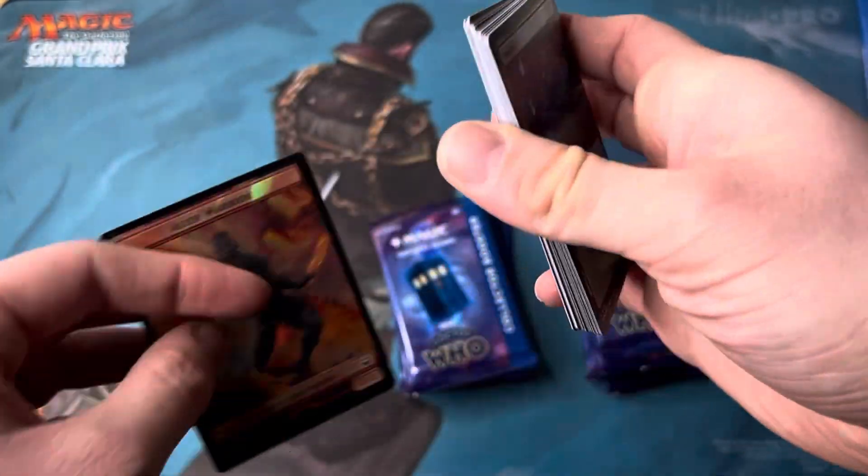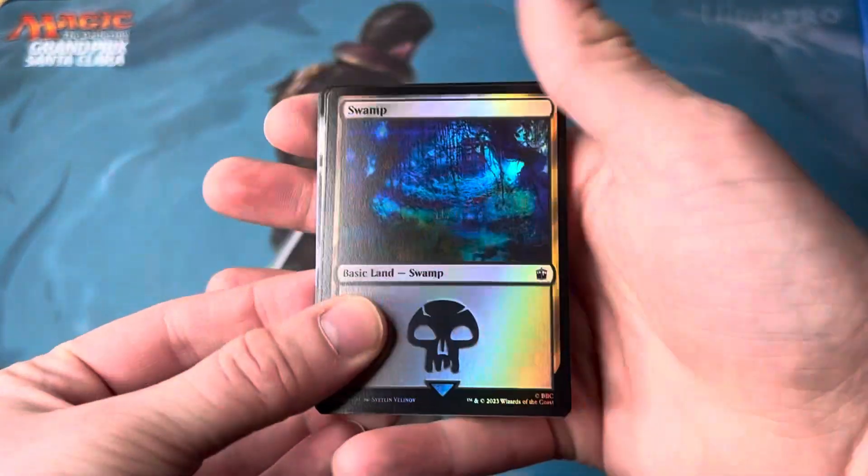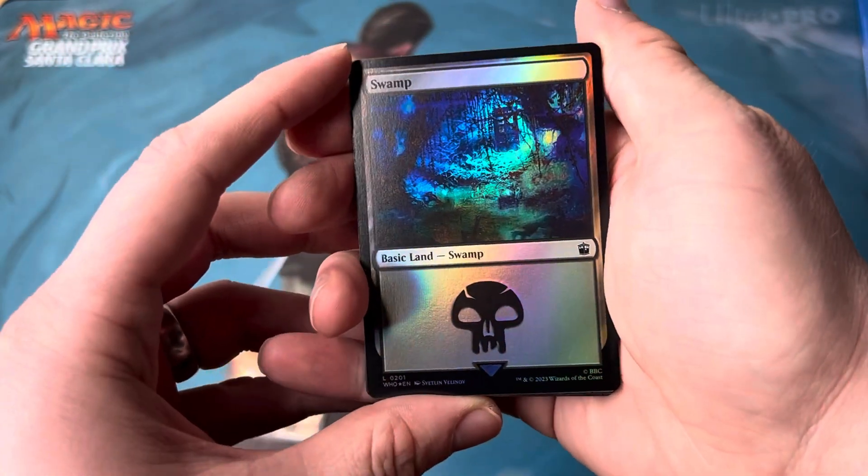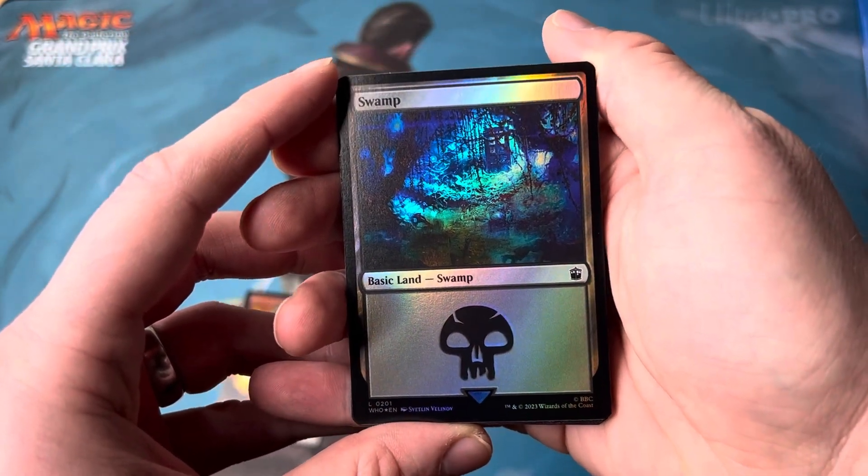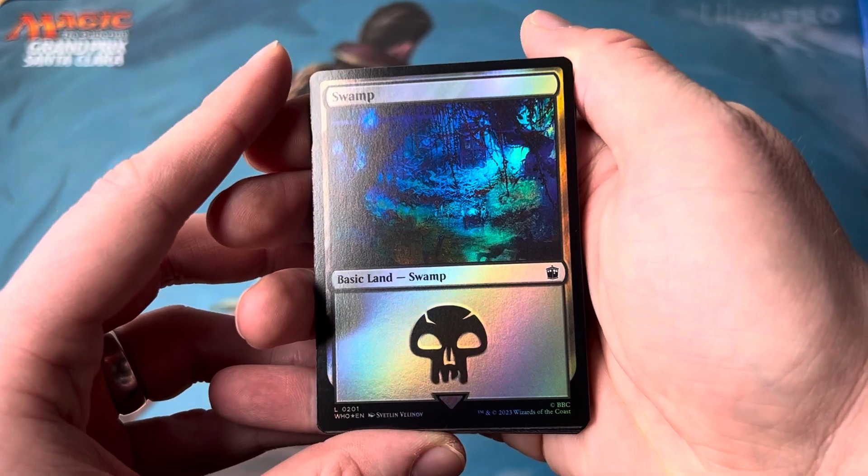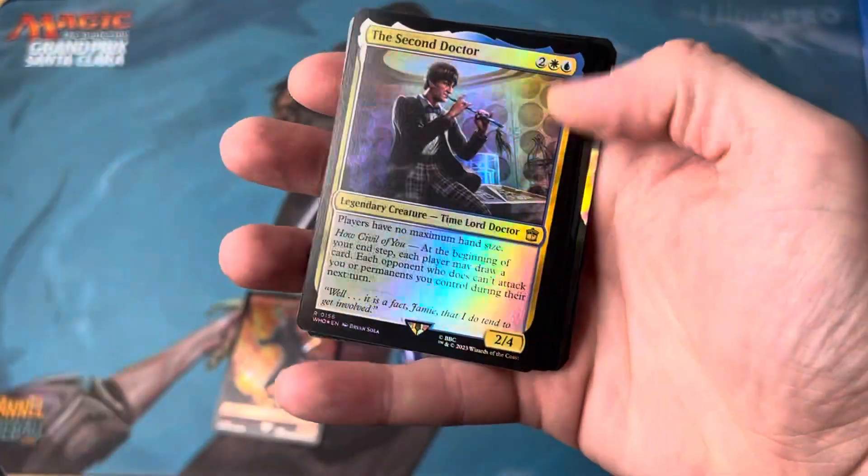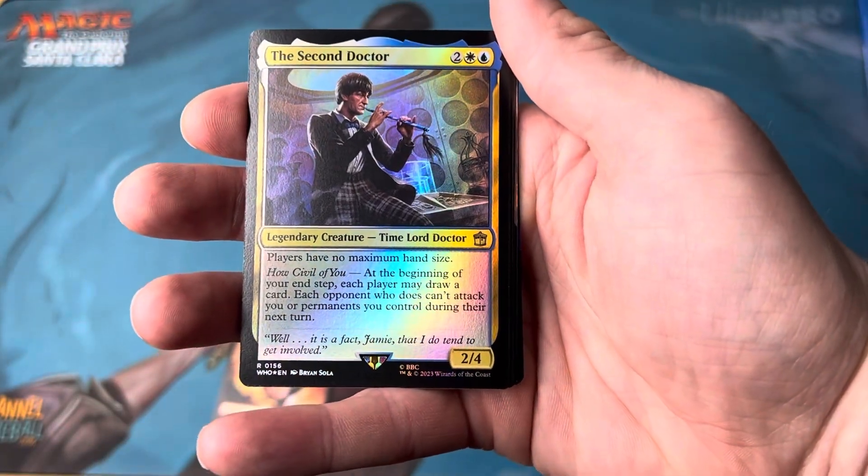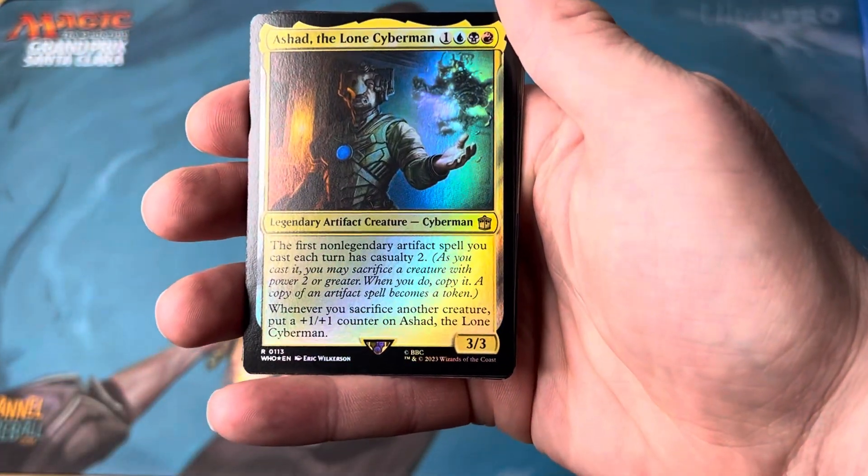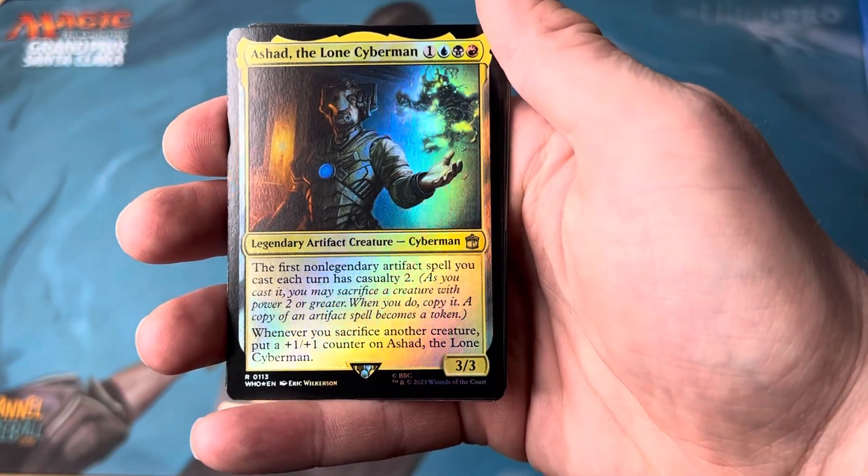Alien Warrior. That's our token. Swamp card here. Oh beautiful swamp. Look at that, we got the TARDIS hiding in the background there. Absolutely fantastic. The second Doctor. Very cool. Not the Doctor I know but Ashad, a lone Cyberman. Very cool.